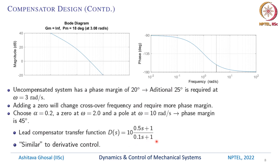There is a zero at 0.5 and a pole at 10 radians per second. In a sense this is similar to a derivative controller, because the numerator is like 0.5s and the denominator is 0.1s + 1 — it is sort of like k·(τ_d·s) divided by (1 + τ_v·s). For the derivative part in a PID controller we had some constant times s divided by (1 + τ_v·s). So this lead compensator is in some sense similar to a derivative controller, but not exactly the same because of the constant term.